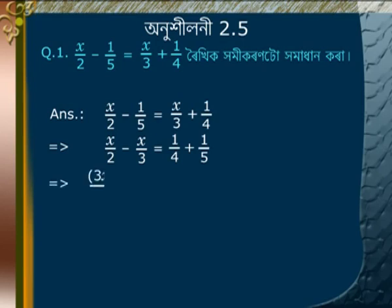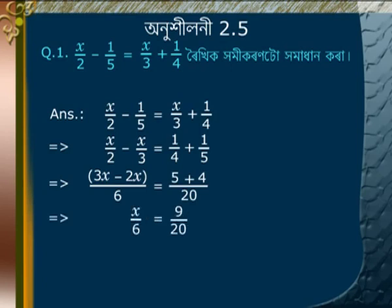Simplifying the left side: x/6 is equal to (5 plus 4)/20, so x/6 is equal to 9/20.